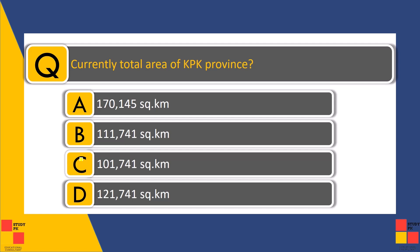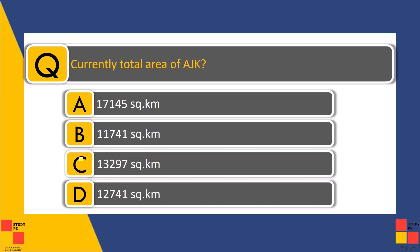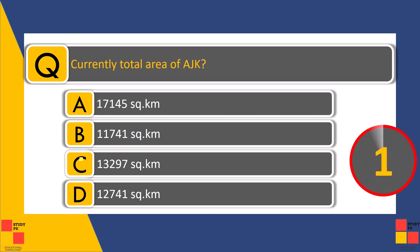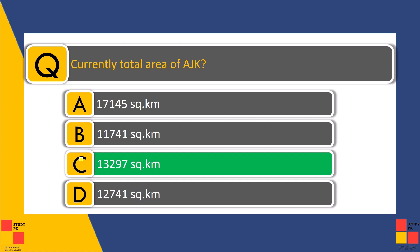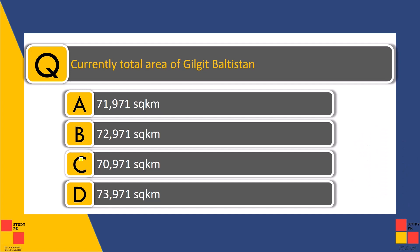Currently, the total area of KPK province after the merger of FATA on 31st May 2018 is 101,741 square kilometers. Currently, the total area of Azad Jammu and Kashmir is 13,297 square kilometers. Currently, the total area of Gilgit-Baltistan is 72,971 square kilometers.